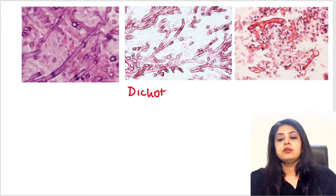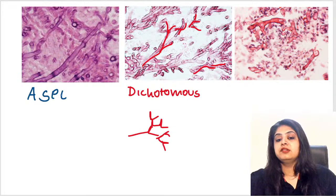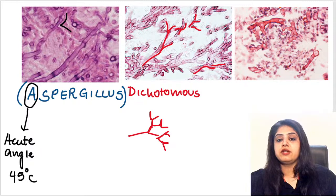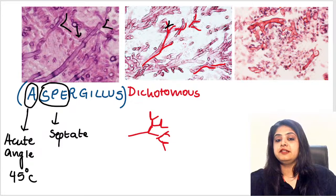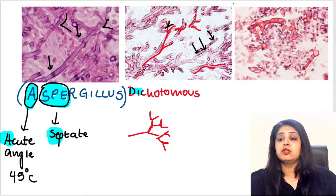Dichotomous refers to a tree-like formation where from one branch multiple other branches come out — a typical dichotomous arrangement visible here. Using the mnemonic for Aspergillus: 'A' tells us acute angle branching at 45 degrees, and 'SPE' tells us these are septate hyphae — you can see the lines and septa inside them. So it is acute angle, septate, and dichotomous branching — all pointing to Aspergillus.